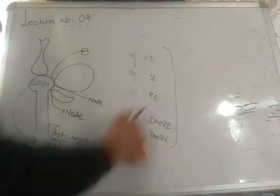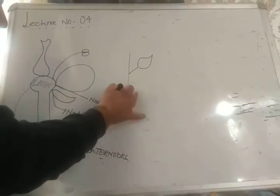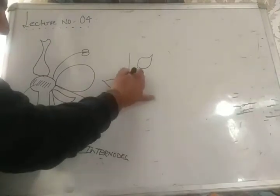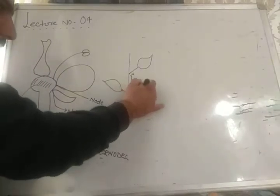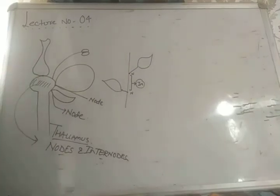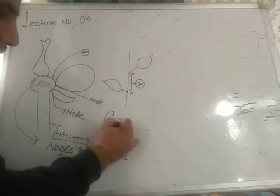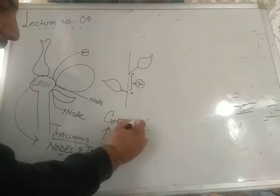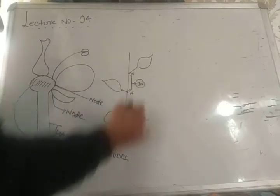Let me erase this and draw a simple diagram. For example, if a leaf arises from this point, this point is called a node. The distance between two nodes is called an internode. On the thalamus, there are nodes and internodes, but these internodes are congested — meaning one node is very close to the other.